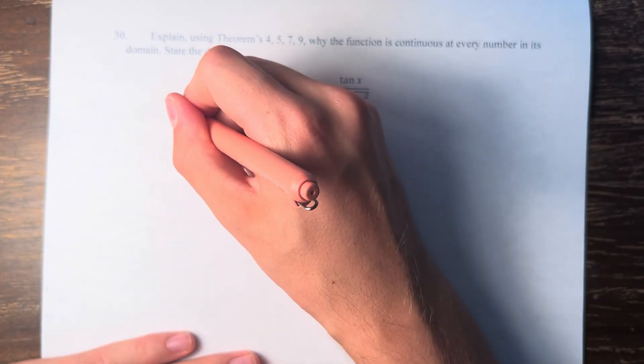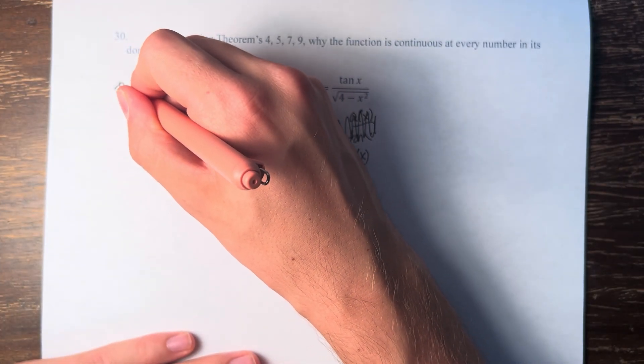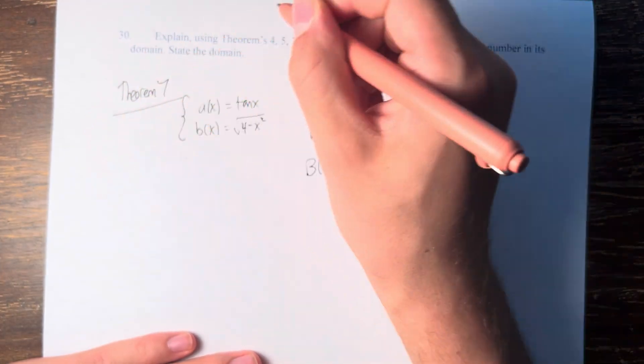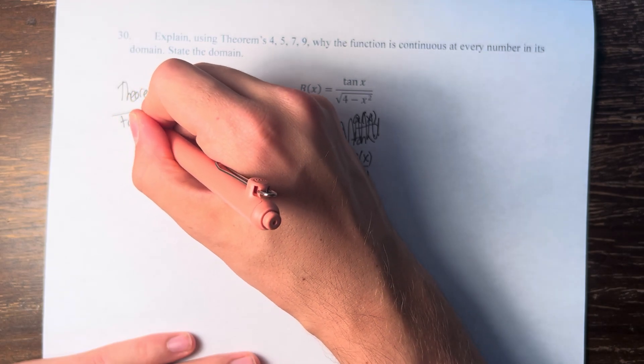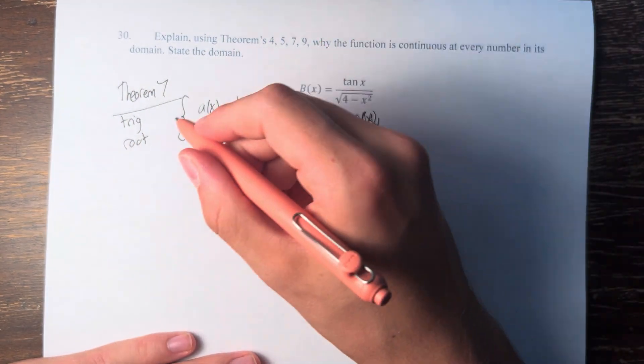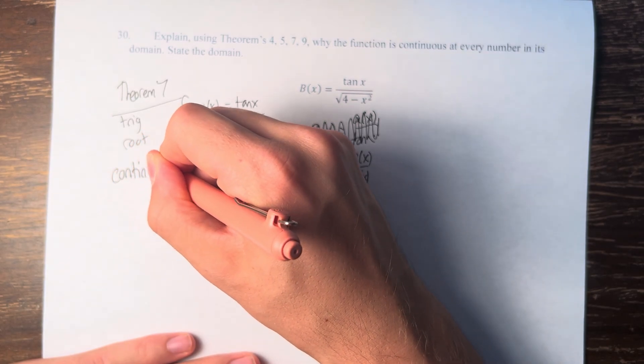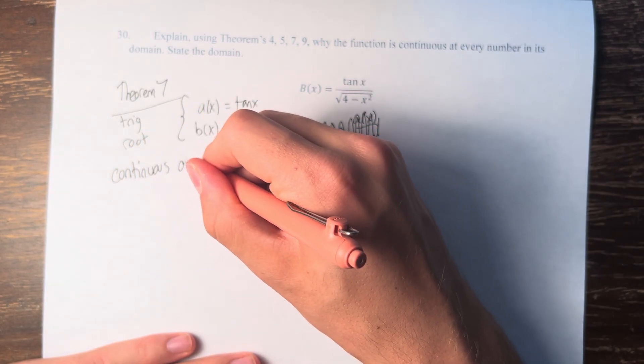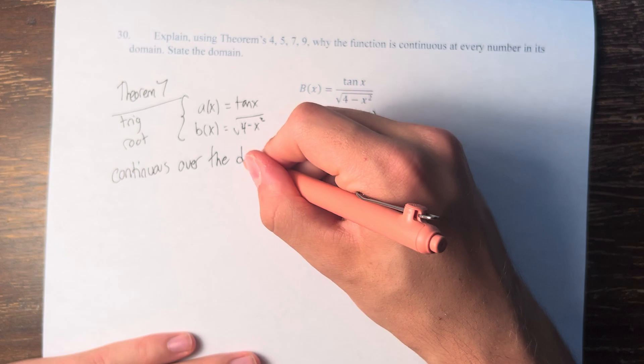The reason we split these up is because we know from theorem 7 that tangent of x, which is a trig function, and the square root of 4 minus x squared, which is a root function, are continuous over their domains. At any number in their domains, they're continuous.